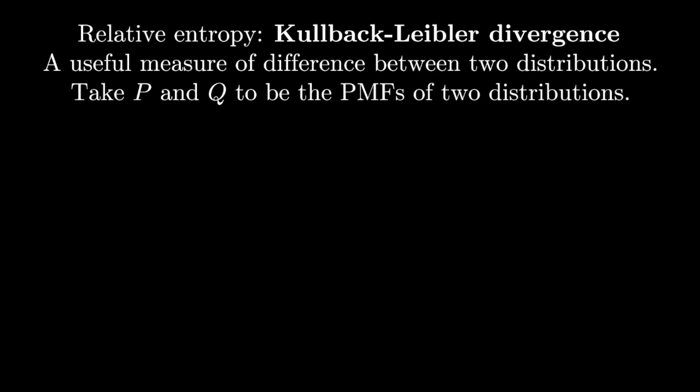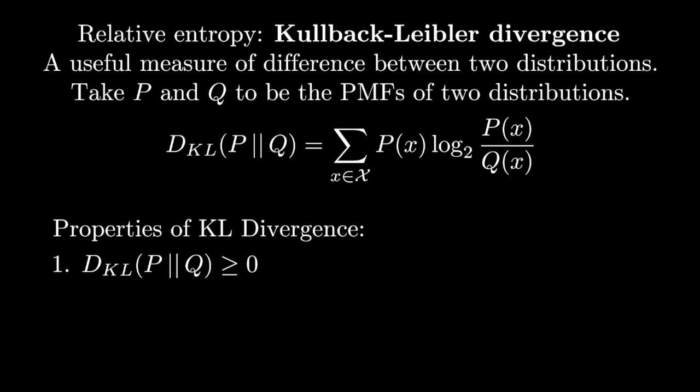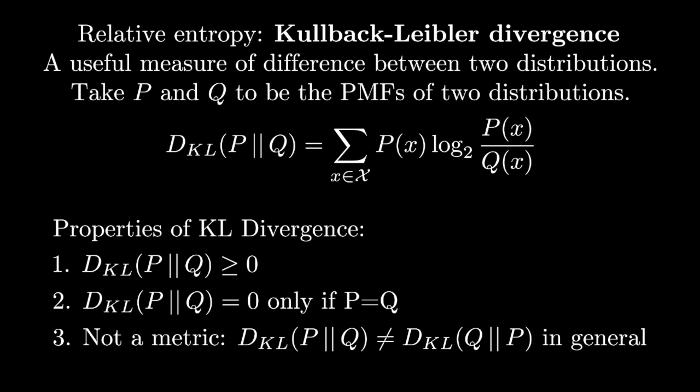One very important information theoretic concept is that of relative entropy. Relative entropy is often called the Kullback-Leibler divergence or the KL divergence. The KL divergence is one very important way that people talk about the difference between distributions. The KL divergence between P and Q is the expectation under P of the log of the ratio of P to Q. It has some useful properties for you to keep in mind. First, it's always non-negative. Second, it's only zero if the two distributions are equal. And third is that even though it looks like a distance, it is not a metric, and part of the reason for that is because it is not symmetric in Q and P. For discrete distributions, we measure KL divergence in bits.